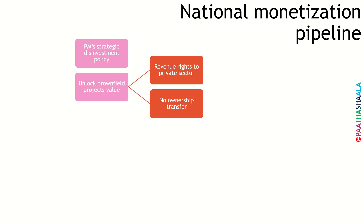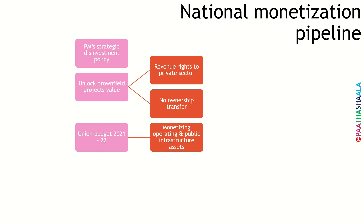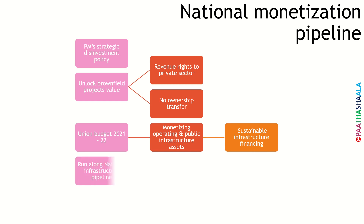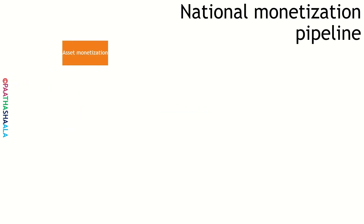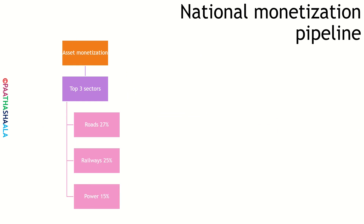But the ownership of the project is not transferred to the private sector — it still remains with the government. Union budget 2021-22 has identified monetization of operating infrastructure and public infrastructure assets as a key means for sustainable infrastructure financing. Currently, assets of central government line ministries and central public sector enterprises in infrastructure sectors are included. This national monetization pipeline will run along the Rs 100 lakh crore national infrastructure pipeline announced in December 2019. The top three sectors by value include roads at 27%, railways at 25% and power at 15%, together accounting for around 66% of the proceeds.